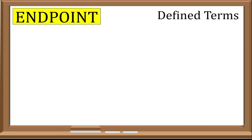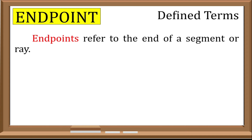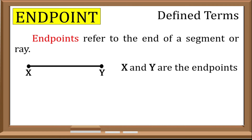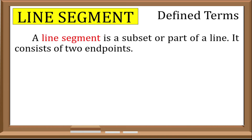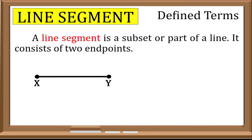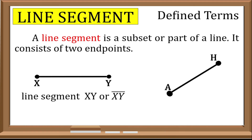First is endpoint. An endpoint refers to the end of a segment or ray. For example, we have line segment XY — the endpoints here are points X and Y. Another example: we have line segment AH — the endpoints here are points A and H. Next would be the line segment. A line segment is a subset or part of a line. It consists of two endpoints. For example, we have line segment XY and line segment AH as examples of line segments.